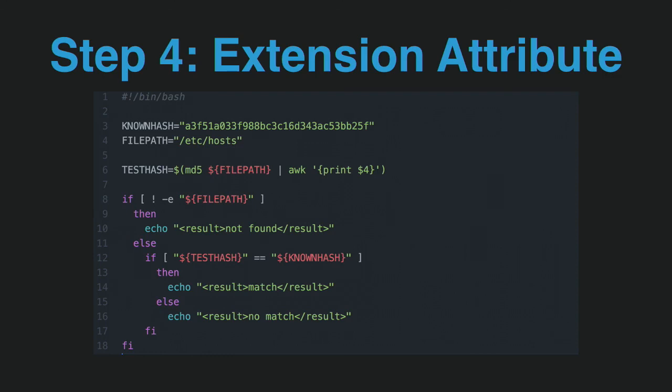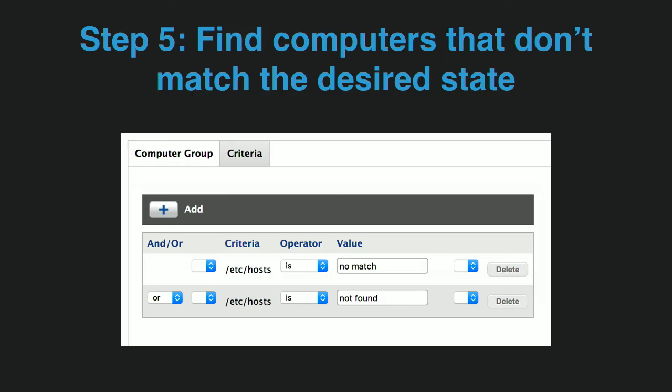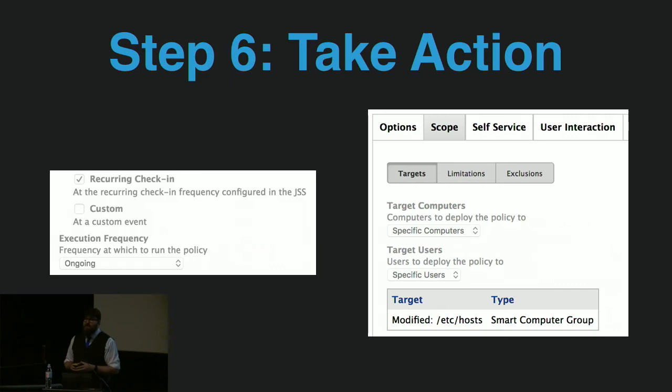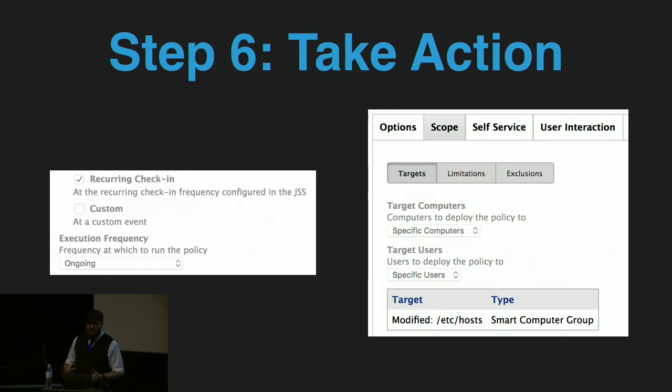Back to our smart groups — we make a smart group that looks for all computers that don't match the desired state, either 'no match' or 'not found.' Any computer that doesn't have an /etc/hosts file or has one that's been modified will show up in this group. Then you need a package that deploys the correct file — make sure the hash matches what you're actually deploying — with ongoing execution frequency scoped to that smart group, so it only runs when absolutely necessary.